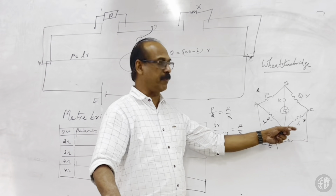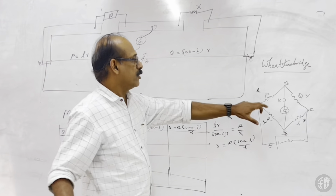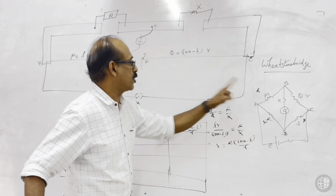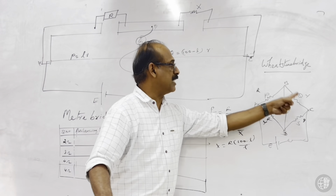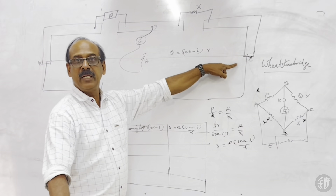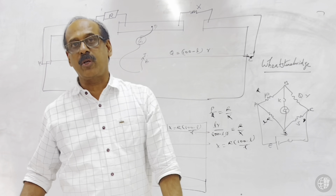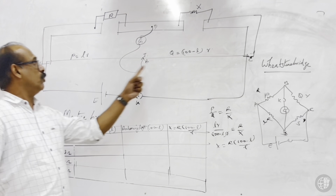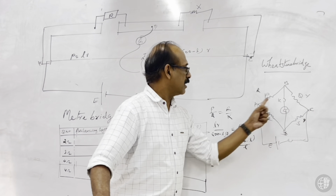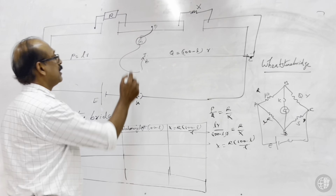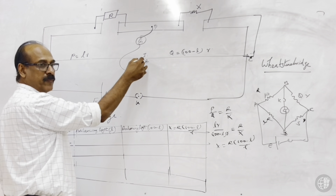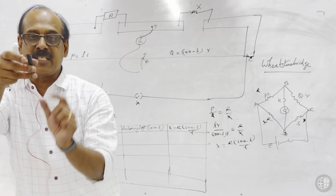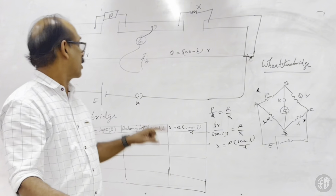The meter bridge has a resistance wire ABC of one meter length — 100 centimeters — that's why it's called a meter bridge. A jockey J can divide this wire at any point. The resistance from A to the jockey represents P and from the jockey to C represents Q. A resistance box provides R, and X is the unknown resistance connected in the gap.